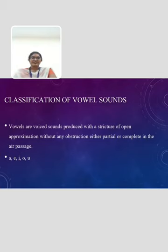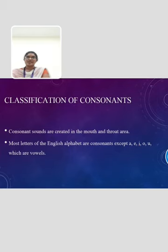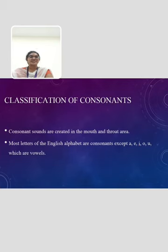The next topic is classification of consonants and vowels. Vowels are voiced sounds produced with a structure of open approximation without any obstruction, either partial or complete, in the air passage. All vowels are normally voiced. Consonants play a significant role in both spelling and pronunciation as well as writing where sound is important. These sounds involve a partial or complete closure of the vocal tract. Most letters of the English alphabet are either vowels or consonants.